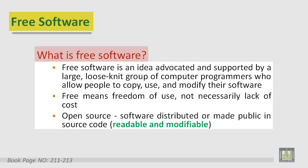Free here means freedom of use, not necessarily lack of cost. Open source software is software distributed or made publicly available in source code — that means the source code is readable and modifiable. Commercial software, often called proprietary software, is normally sold in object code, the code run by the computer but not intelligible to people.